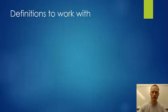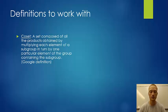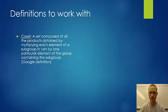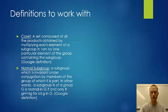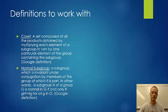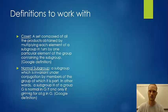Definitions to work with today. A coset is a set composed of all the products obtained by multiplying each element of a subgroup by one particular element of the group containing the subgroup. A normal subgroup is a subgroup which is invariant under conjugation by members of the group — in other words, a subgroup H of a group G is normal in G if and only if gH equals Hg for all g in G. Those are the formal definitions; we're going to break them down.